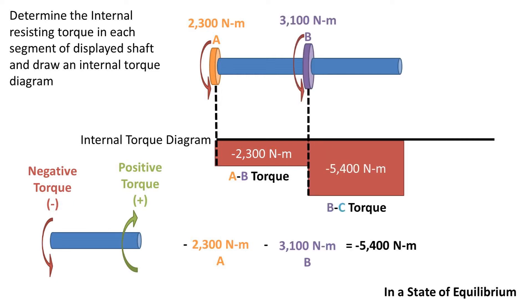Next, we come across another negative torque, which is 3100 newton meters at B. Taking the negative torque of 2300 newton meters at A and adding the negative torque of 3100 newton meters at B, we get a torque at segment BC of negative 5400 newton meters, which we can plot on the internal torque diagram between point B and point C.